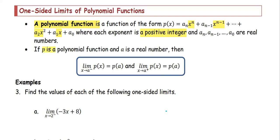If p is a polynomial function and a is a real number, then the left side limit and the right side limit of that polynomial function is the same as the function value at point a.